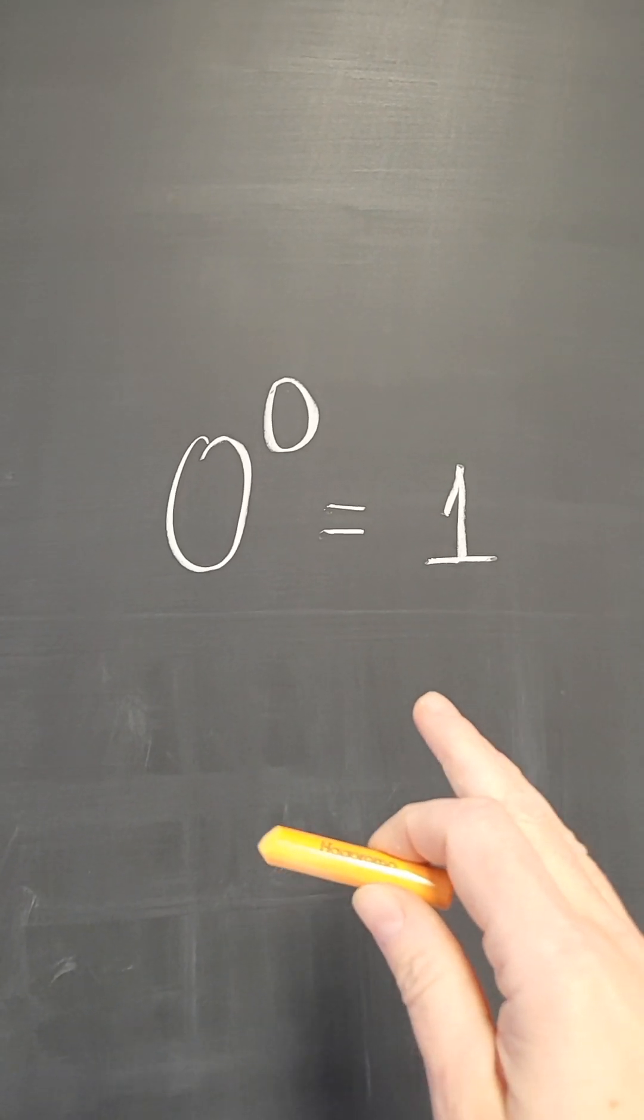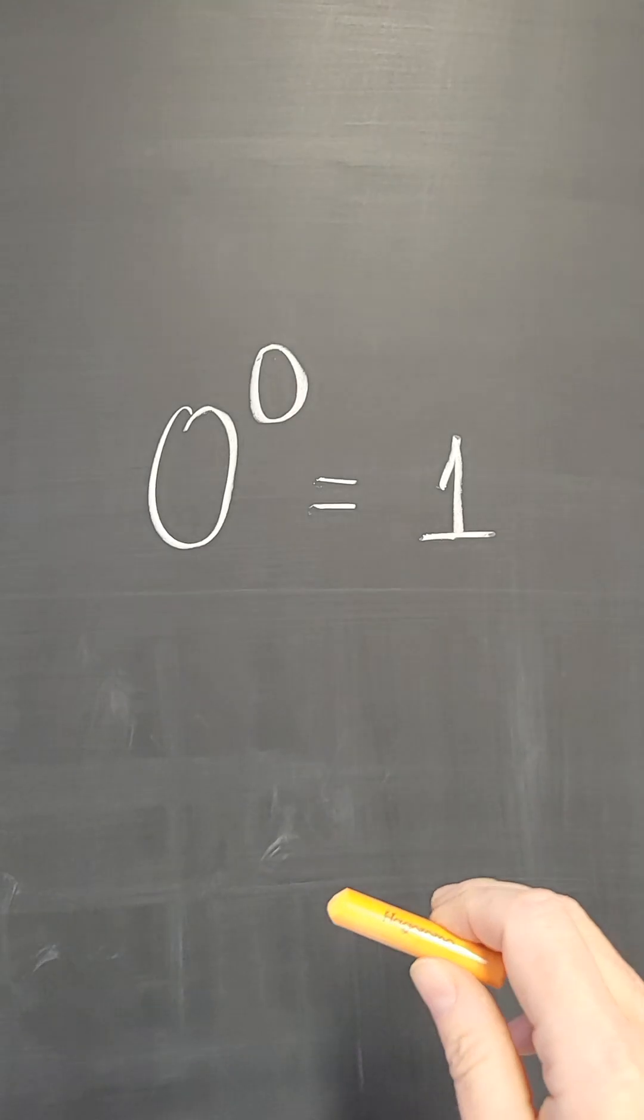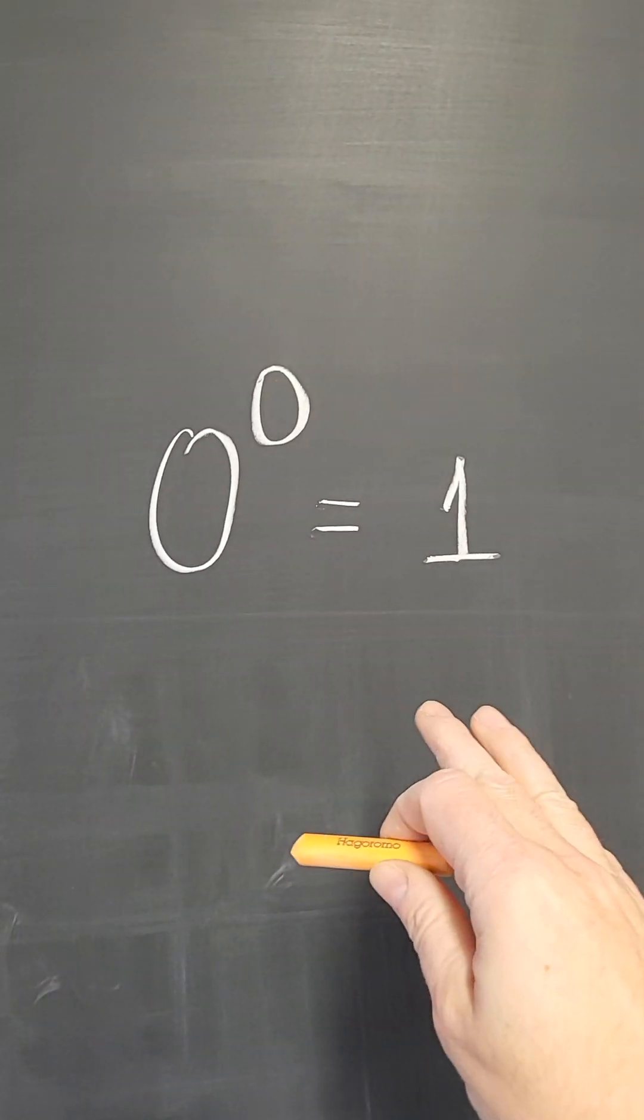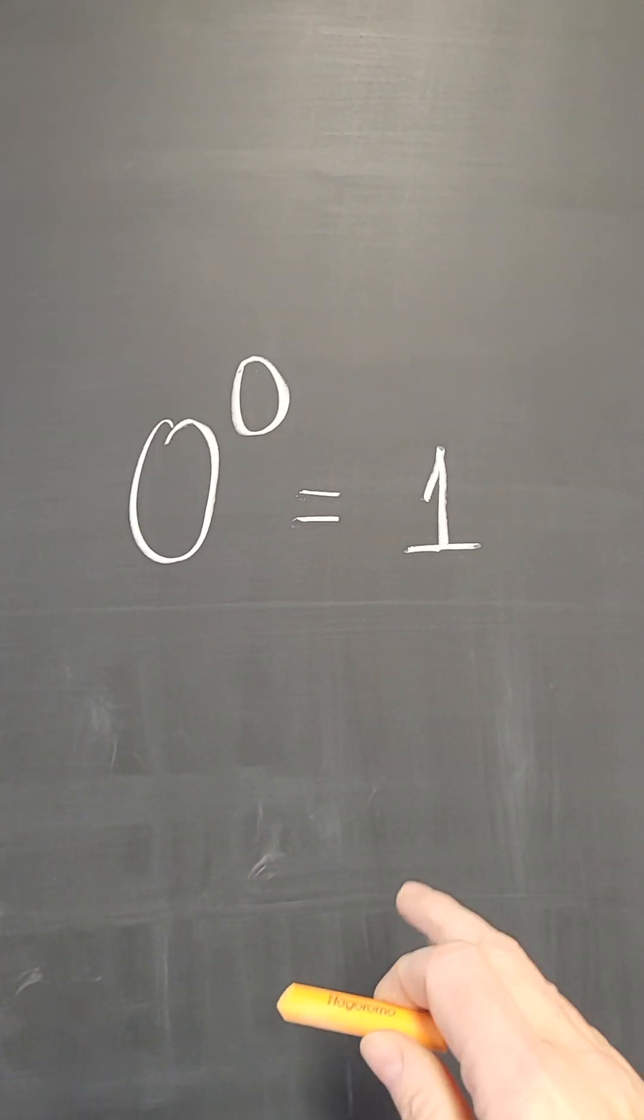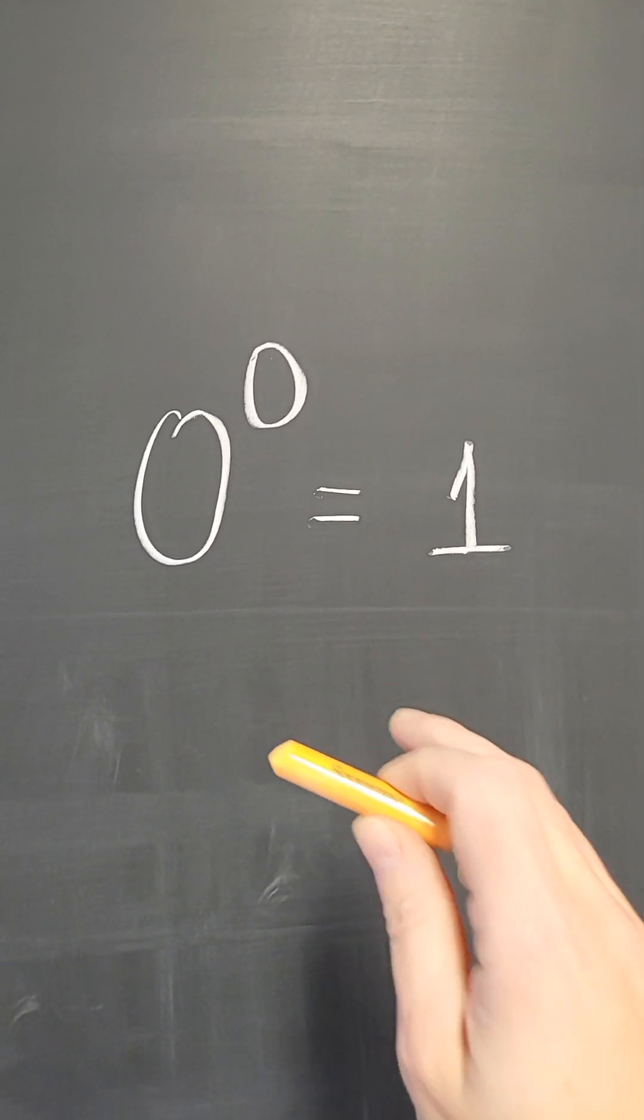If you ask some mathematicians what's the value of 0 to the 0, they will tell you that it is 1. Especially people in set theory, in analysis, in combinatorics, many of them think that 0 to the 0 is equal to 1.